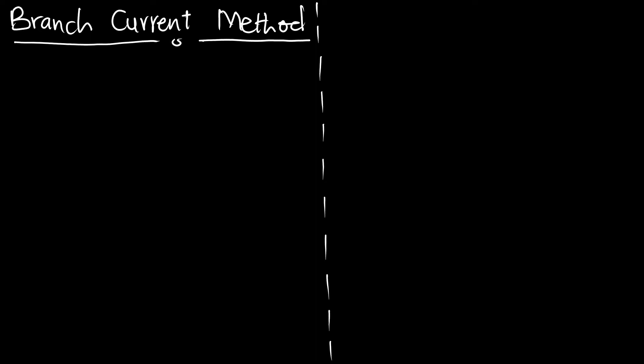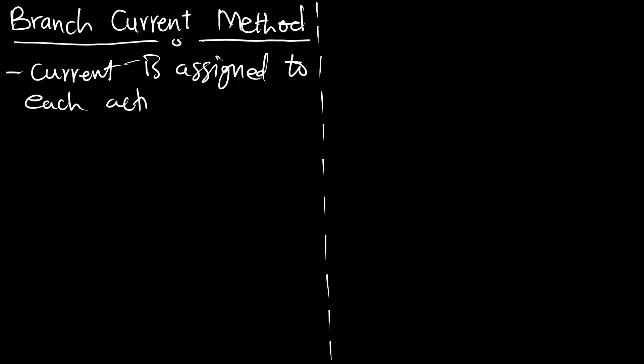Welcome to Einstein Mechanics. In this episode we are going to talk about the branch current method, which is a circuit analysis method. In this method, current is assigned to each active branch in the circuit.